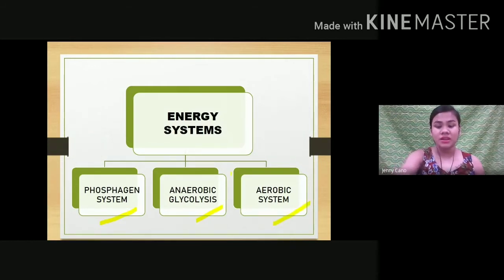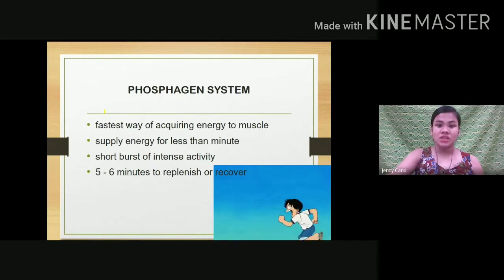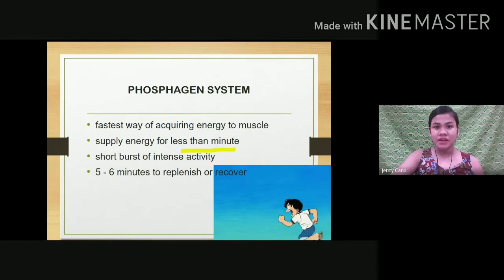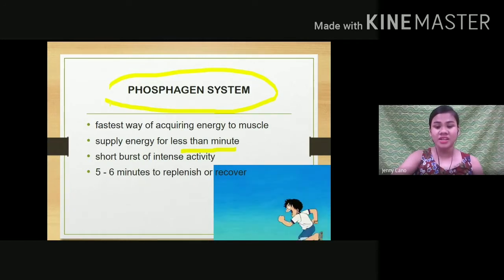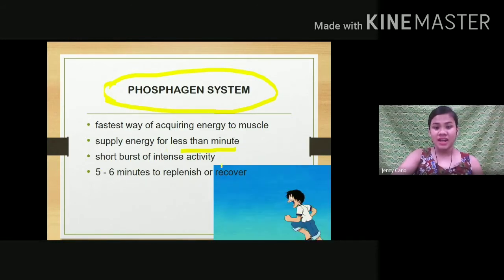The phosphagen system is the fastest way of acquiring energy for the muscles. It can supply energy for less than one minute — short bursts of intense activity. An example activity is 20 seconds of running. For instance, if you run to the store for 20 seconds, that falls within the less-than-a-minute range, so the phosphagen system is the active energy system supplying your energy.